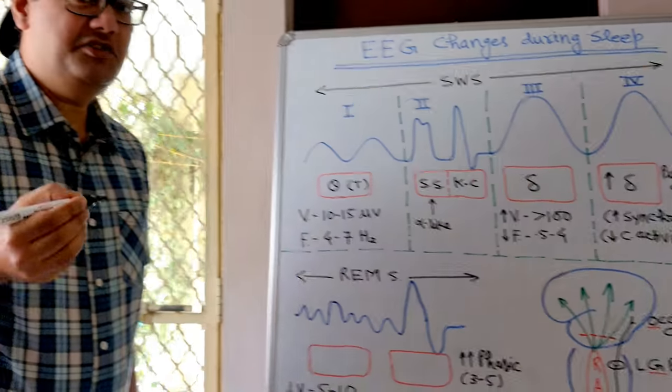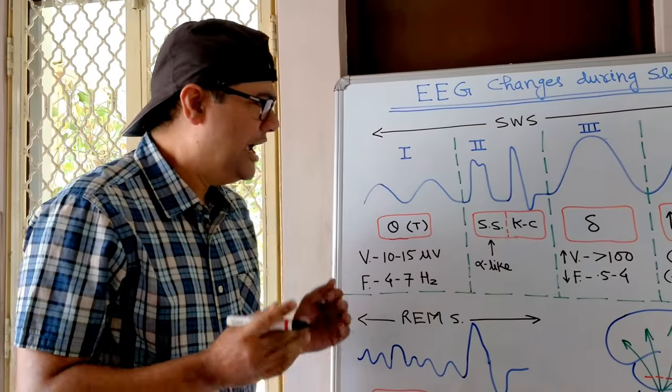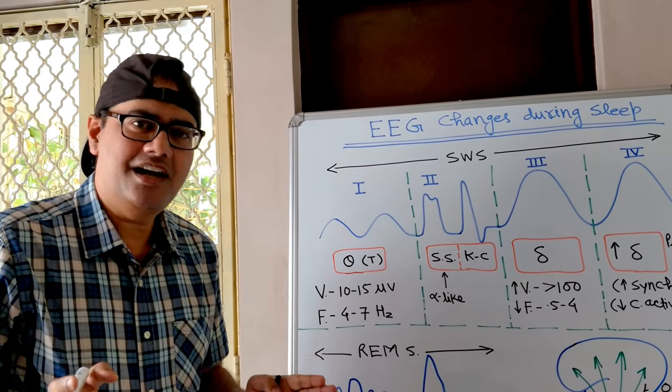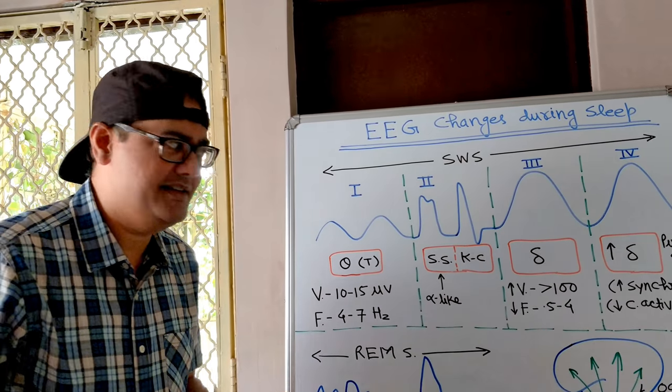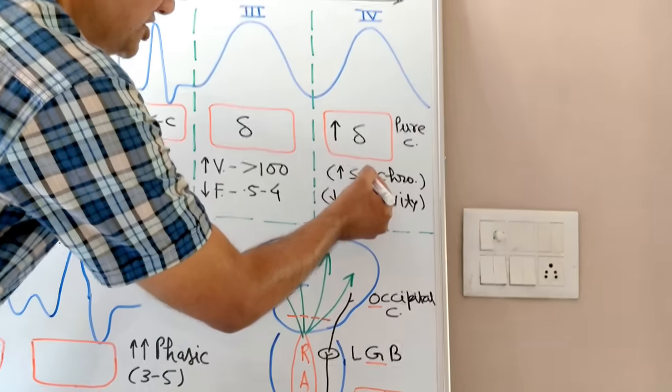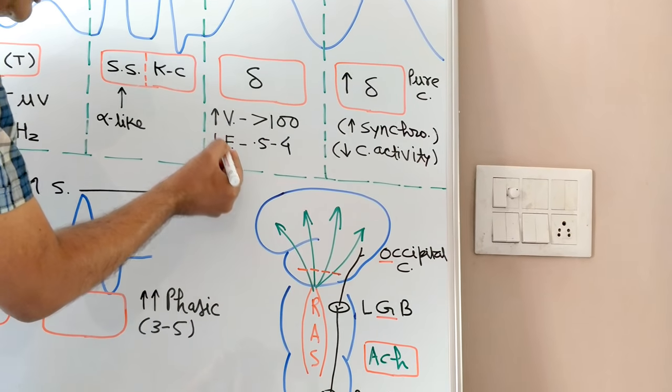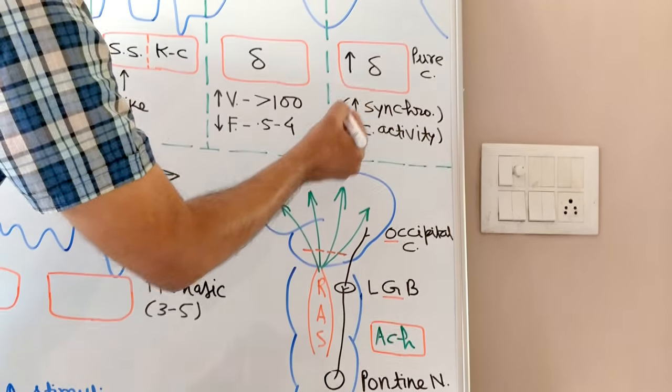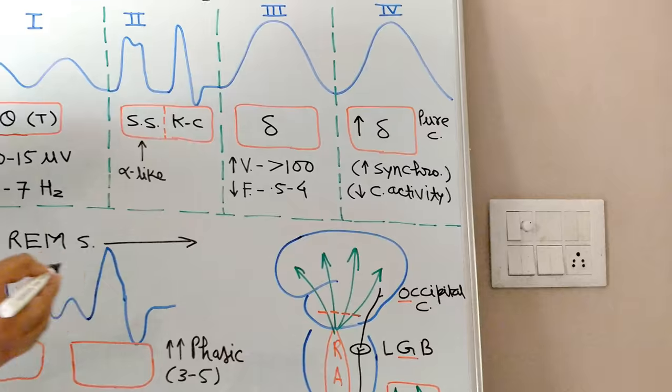frequency EEG waves. They are having highest voltage because cortical neuronal discharges are most simultaneous - degree of synchronization is high. They are having least frequency because cortical activity in totality is least. They are pure cortical because these are the